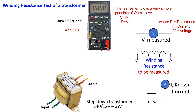Therefore, as per Ohm's law, the measured resistance Rm is equal to 7.927 ohms, which is nearly equal to 8 ohms — the resistance measured by multimeter alone.